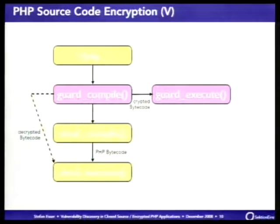With older cryptors, when the file was encrypted, the decrypted bytecode was passed directly to the PHP executor — so once you hooked the execute function, you had the original bytecode and could work on it. With newer cryptors, the complete executor is replaced with something different, so the Zend Optimizer executes the encrypted PHP rather than the PHP engine itself.